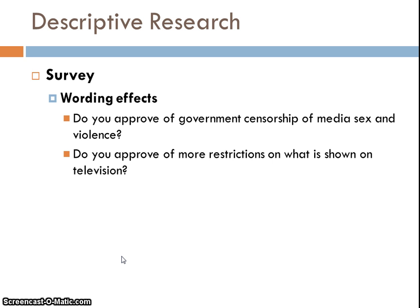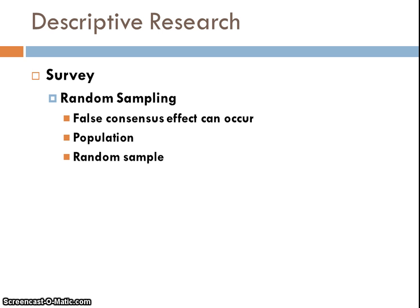Look at these two questions: 'Do you approve of government censorship of media sex and violence?' Most people would probably say yes — you do think the government should censor sex and violence on TV. You can also ask: 'Do you approve of more restrictions on what is shown on television?' Most people are going to say no. The question is asking the same thing in general terms; however, your responses to those two questions could be different. So with a survey, you really have to be careful for how things are worded.